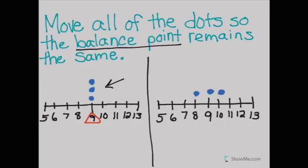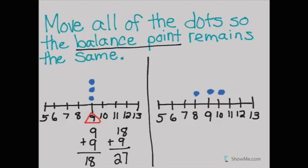Well, I thought about it mathematically. Over here I know that each dot is worth nine, so I added up nine plus nine plus nine and I got 27. I have three dots, so 27 divided by three gives me nine. Nine is my mean. The balance point is another word for mean.